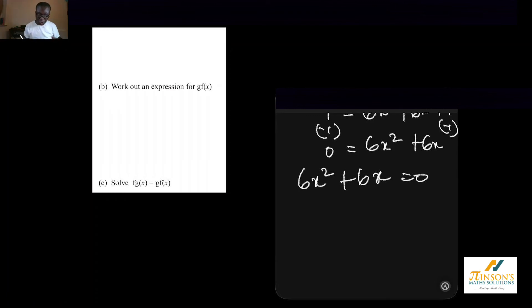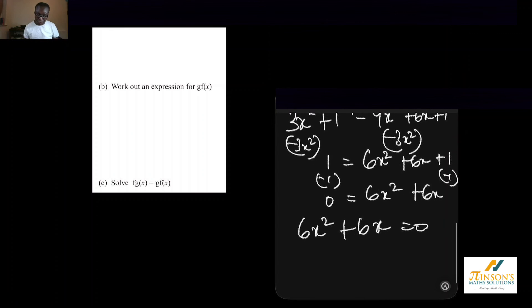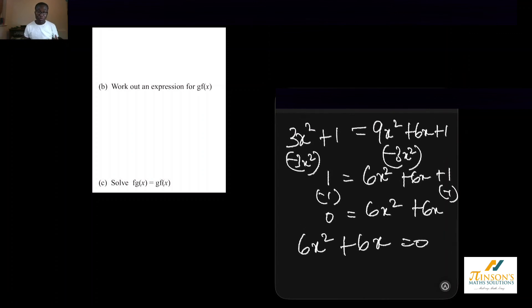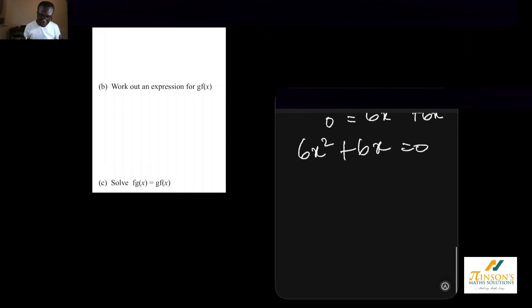What this actually means is the same as saying we've got 6x squared add 6x equal to 0. If you're confused, I'll encourage you to watch my video on solving quadratic equations. We can see 6x is common. We could factorize 6x out. What do I multiply by 6x to get 6x squared? It's just x. What do I multiply by 6x to get 6x? It's just 1. That means we've got 6x equal to 0 or x add 1 equal to 0.